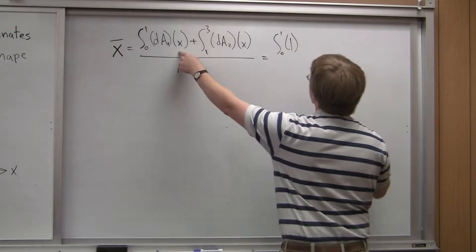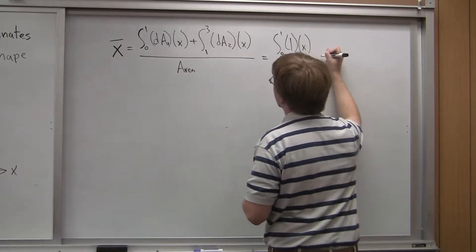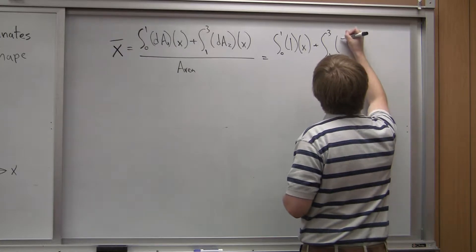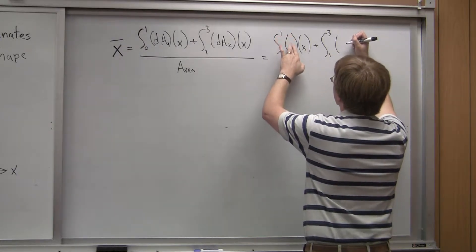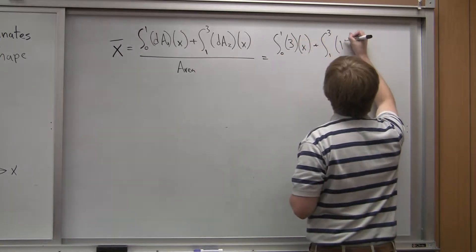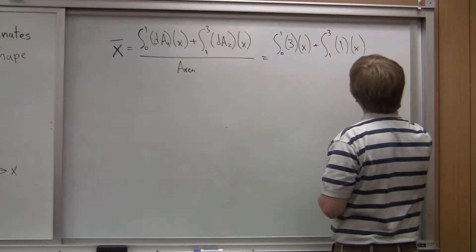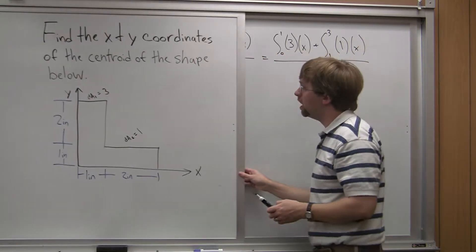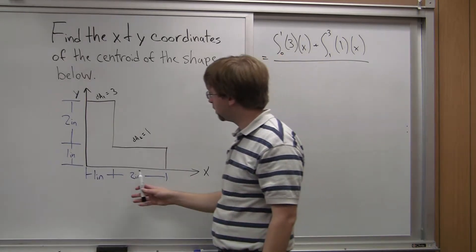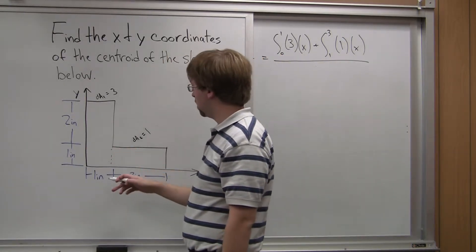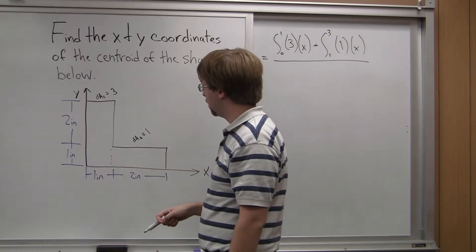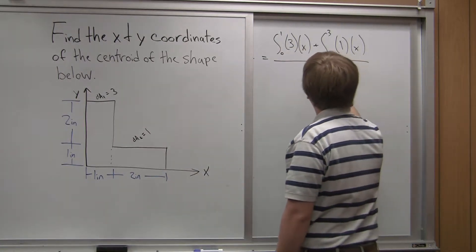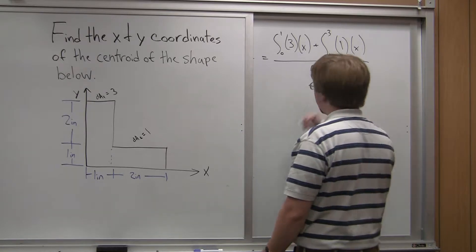We plug those values in: the integral from zero to one with height three, times X — that's our moment integral — plus the integral from one to three with height one, times X, all divided by the area. The area: we have a vertical section one inch wide by three inches tall, giving three square inches, and a second part two inches wide by one inch tall, giving two square inches. So the total area is five square inches.